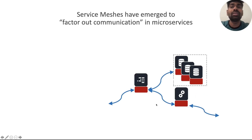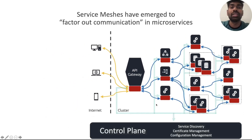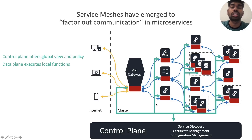But the sidecars only form the service mesh's data plane. The service mesh also has a control plane which can control these sidecars as a whole. The control plane offers users a global view and allows them to specify mesh-wide policies as well as configure the data plane, while the data plane is responsible for executing local functions.